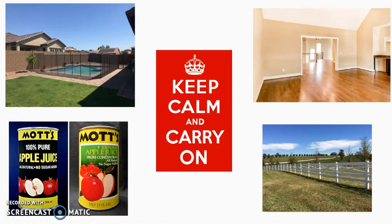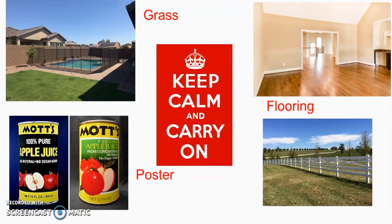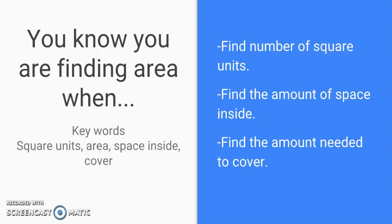These images are similar to the first ones except for the poster in the center. If you have a similar situation but they ask different questions — like how much grass does it take to cover a yard, how much flooring you'd need for a room, or what's the area of a poster — then you know you're finding area, not perimeter. Keywords for area include: number of square units, square feet, or square yards; how much space is inside; or how much would you need to cover something.